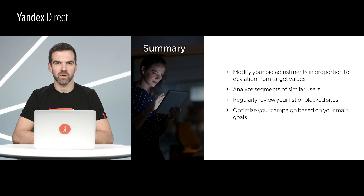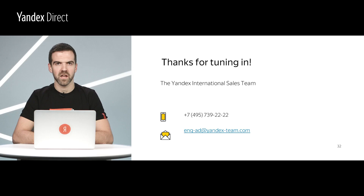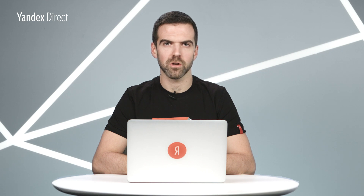Let's summarize the main points of today's lesson: modify your bid adjustments in proportion to deviation from target values, analyze segments of similar users, regularly review your list of blocked sites, and optimize your campaign based on your main goals. Use the checklist to make sure that all of your settings in campaigns for ad networks are correct. It's important that you continue to experiment, segment, and tweak your campaign to help you reach your goals. Thanks for tuning in, and good luck with your campaigns. Also, check out the links.